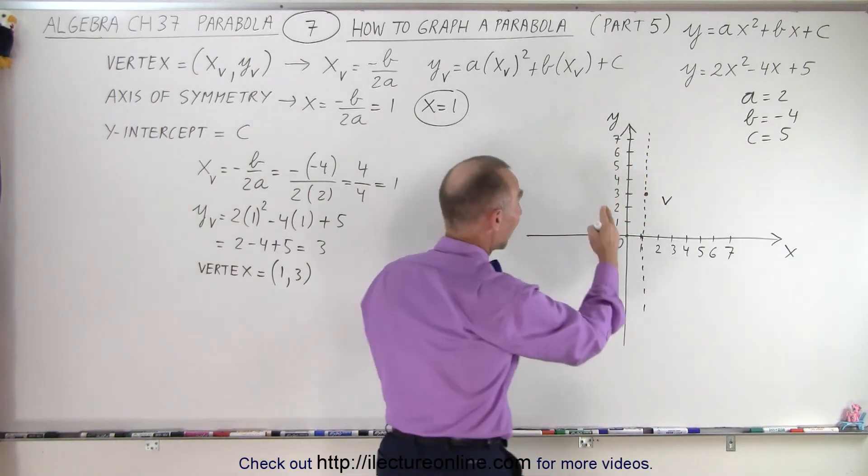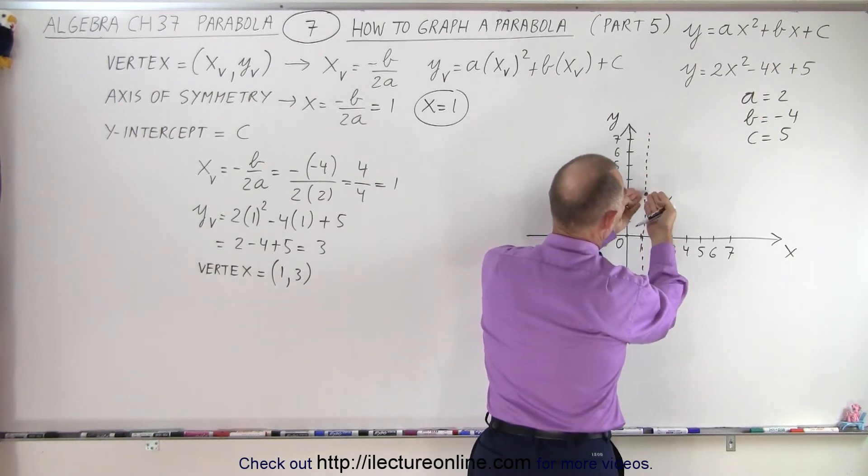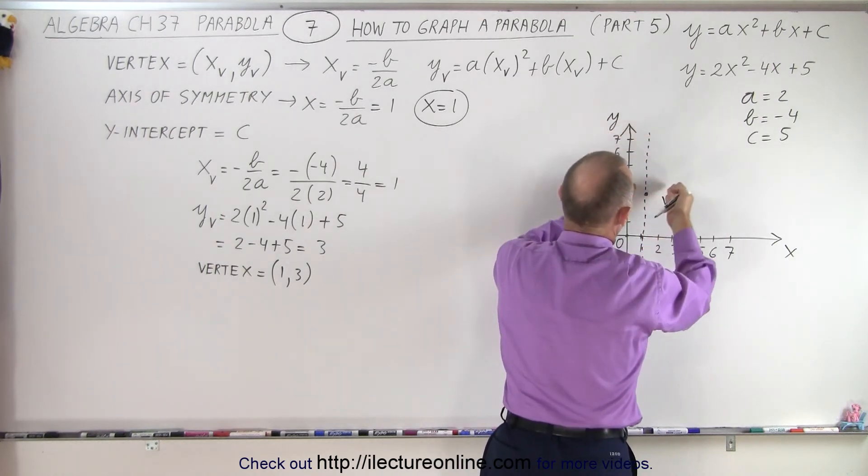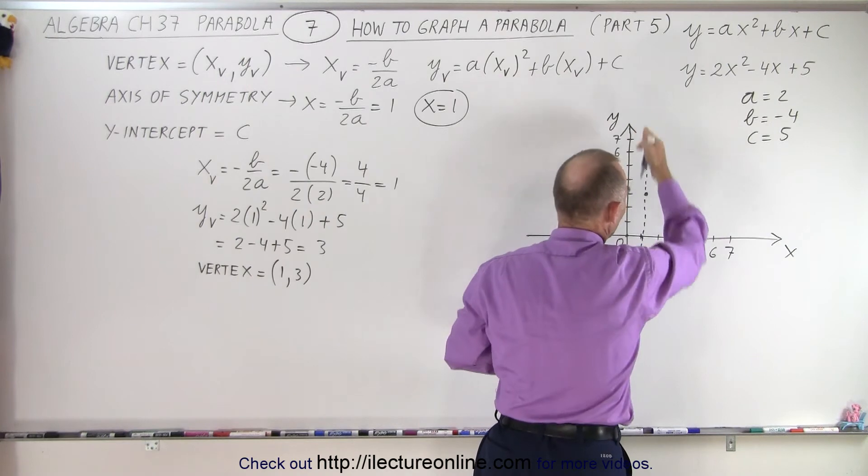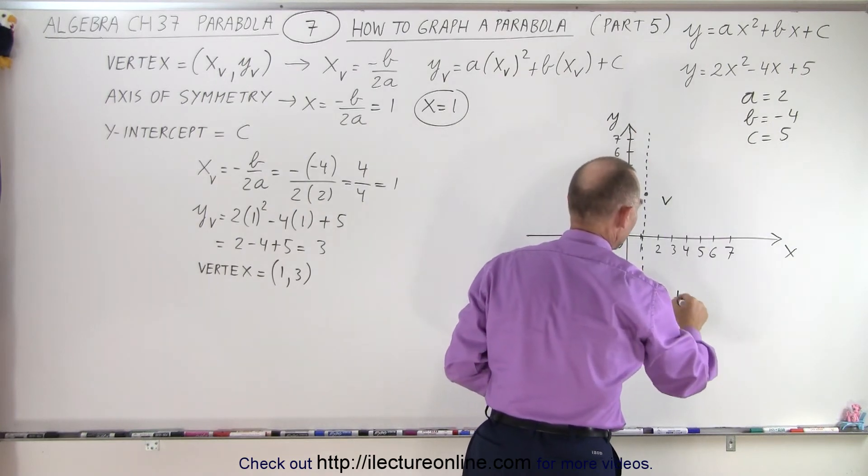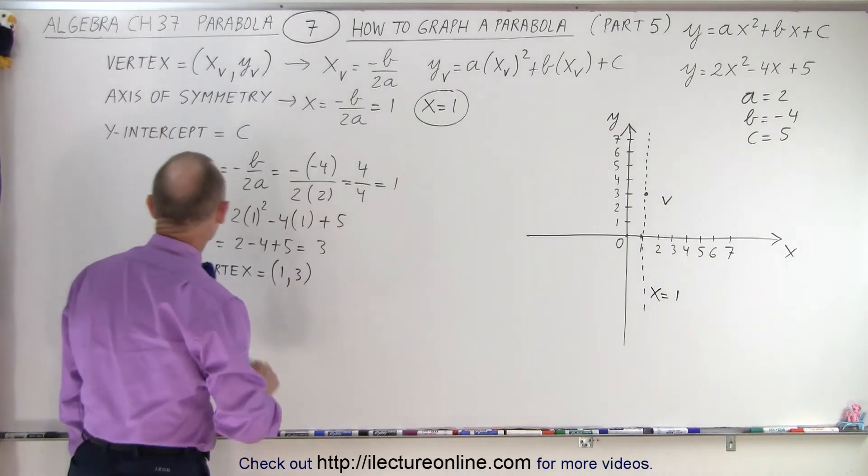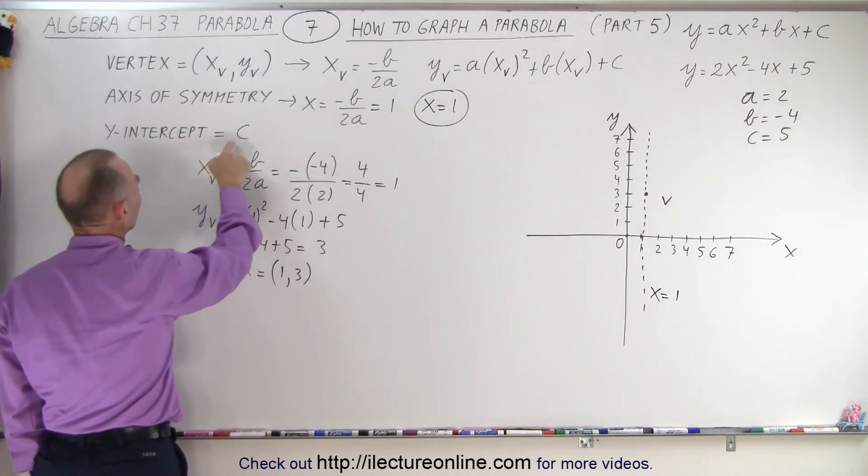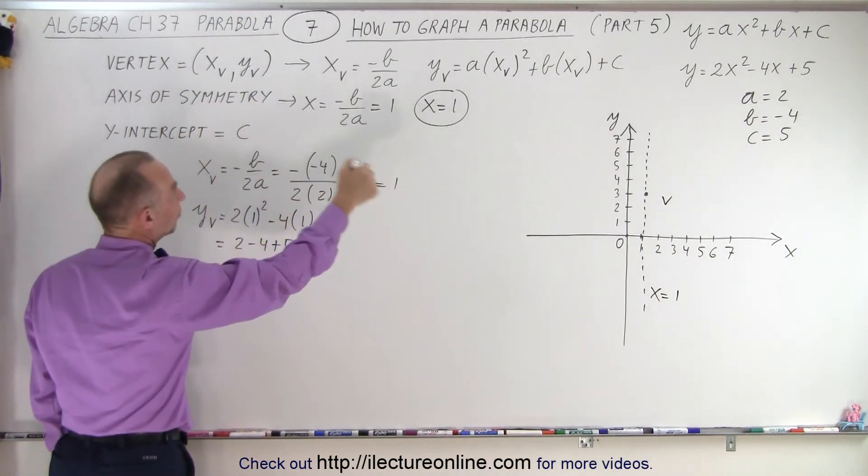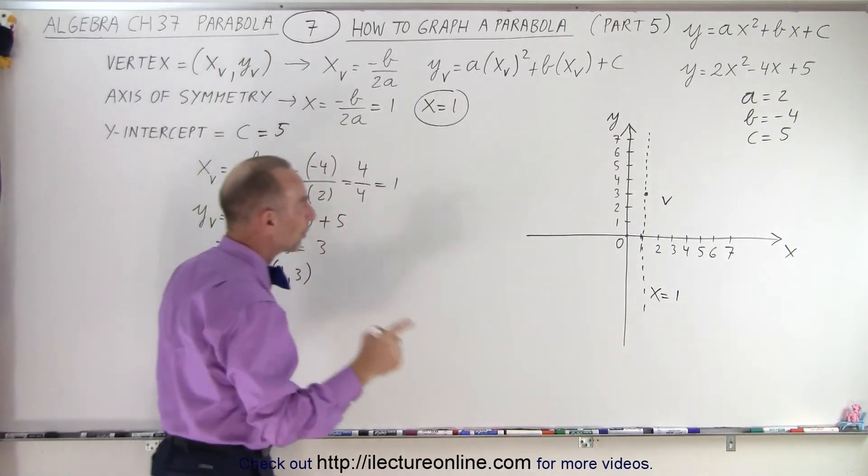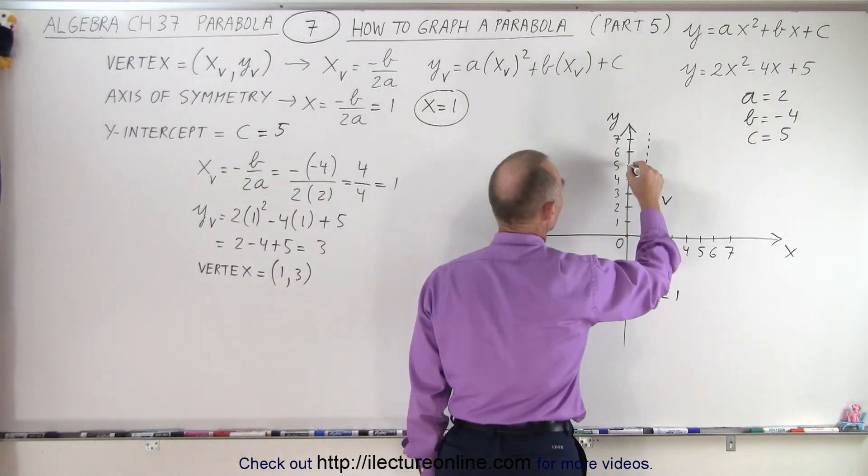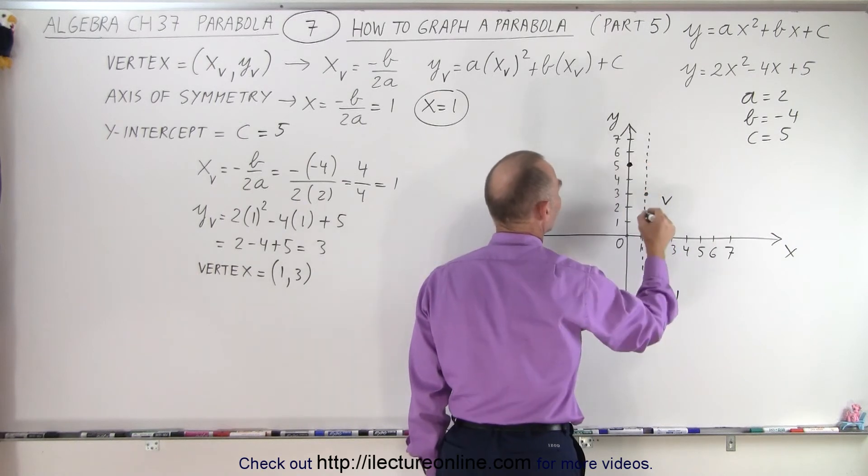Which means that that line is right in the middle of our graph, so our graph is going to open upward. And this line right here, x equals 1, is what we call the axis of symmetry. And finally, we're going to find the y-intercept. In this case, the y-intercept is equal to c, and c is equal to 5. Now it means that the parabola will cross the y-axis when y equals 5.